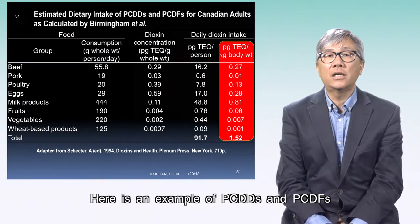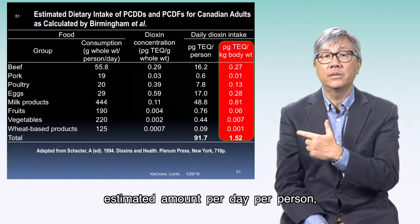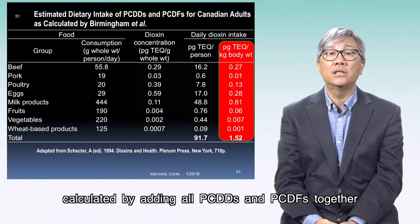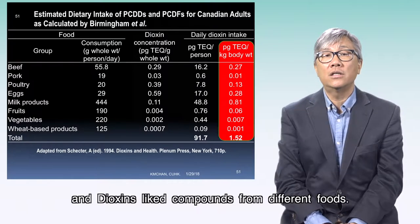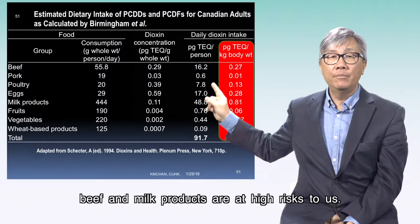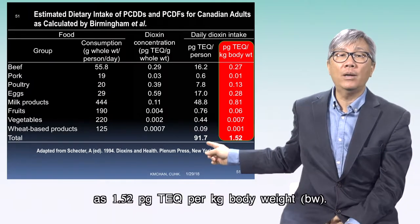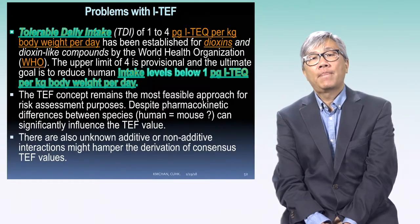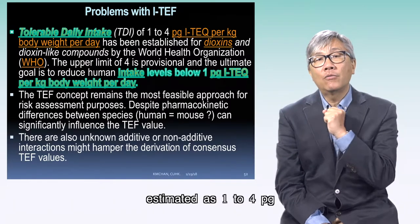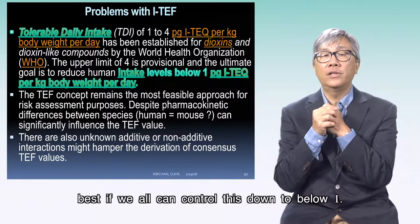Here is an example of PCDDs and PCDFs for Canadian adults with different foods consumed, estimating the amount per day per person. Detected dioxins and dioxin-like compounds are shown in TEQs, calculated by adding all PCDDs and PCDFs together to estimate the amount from different foods. We can see that beef and milk products are at high risk. The total daily dioxin intake was estimated as 1.52 pg TEQ per kg body weight. WHO now has a Tolerable Daily Intake (TDI) estimated as 1 to 4 pg TEQ per kg body weight per day, with the upper limit set at 4 — best if we can control this down to below 1.